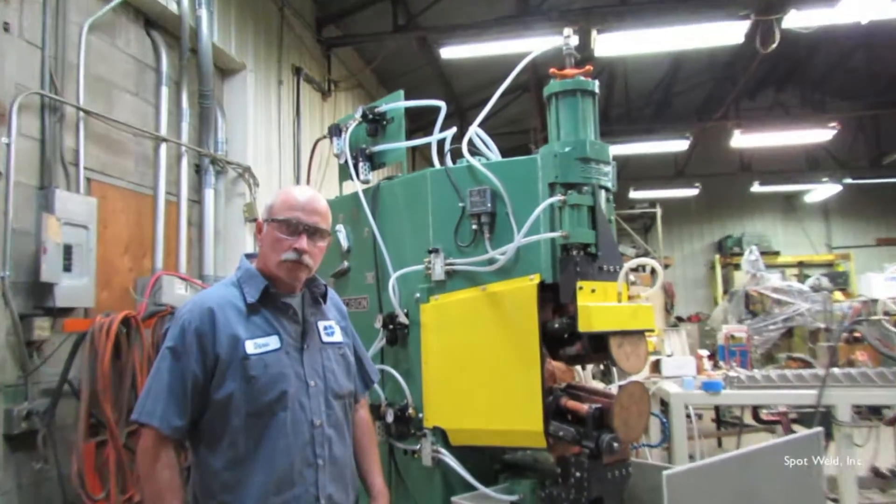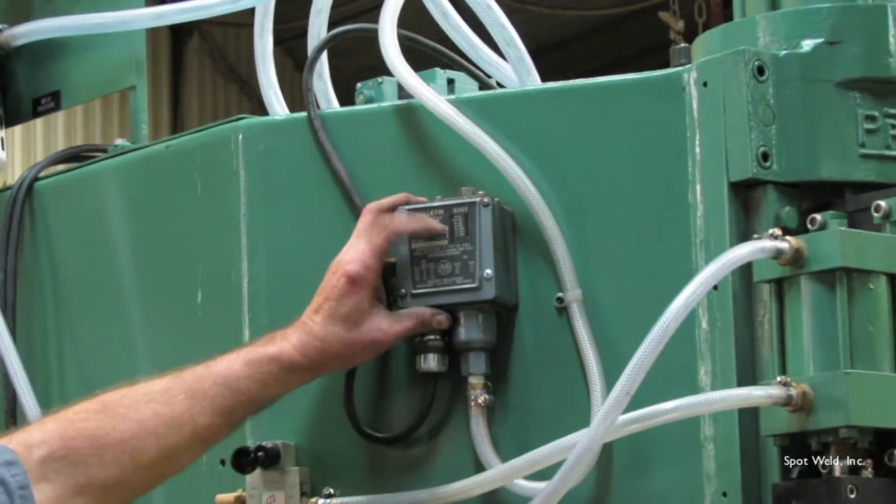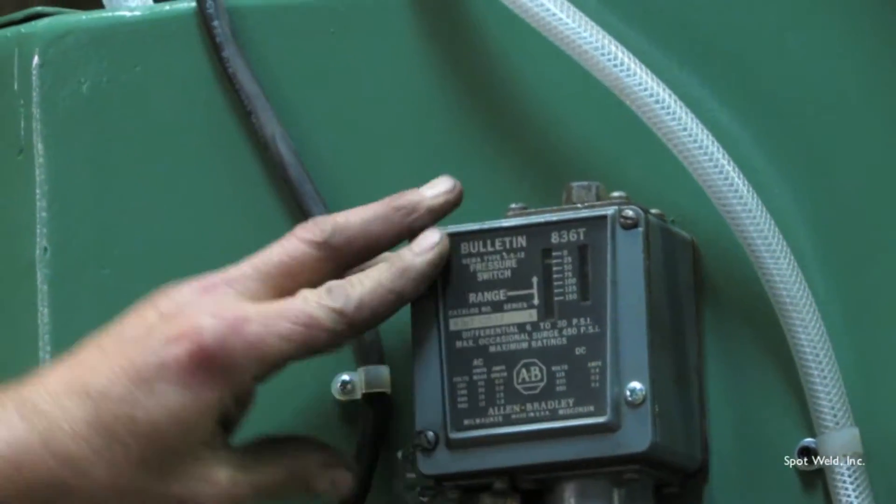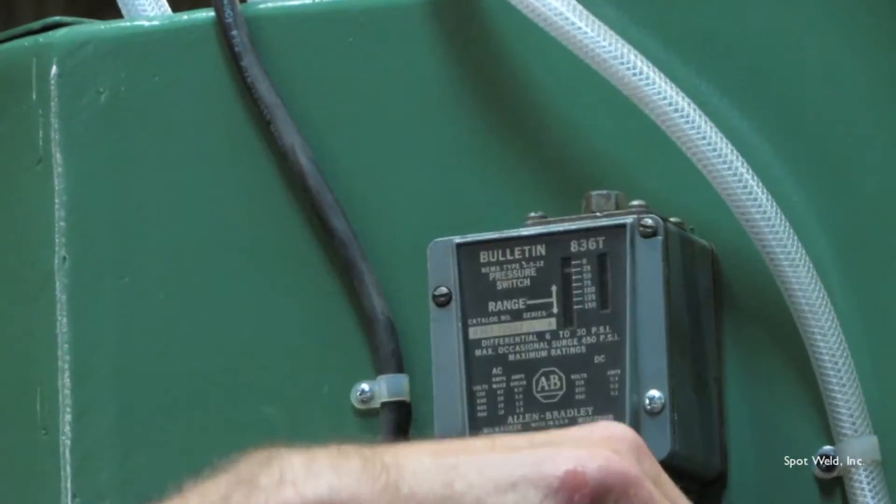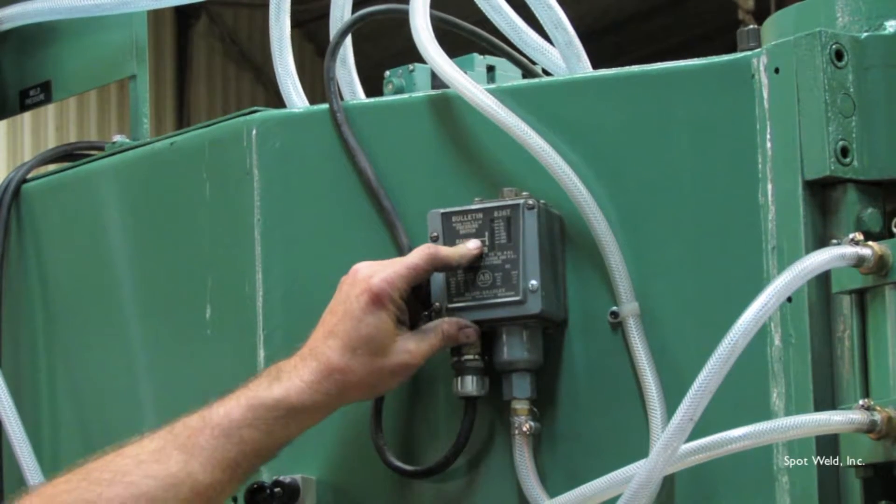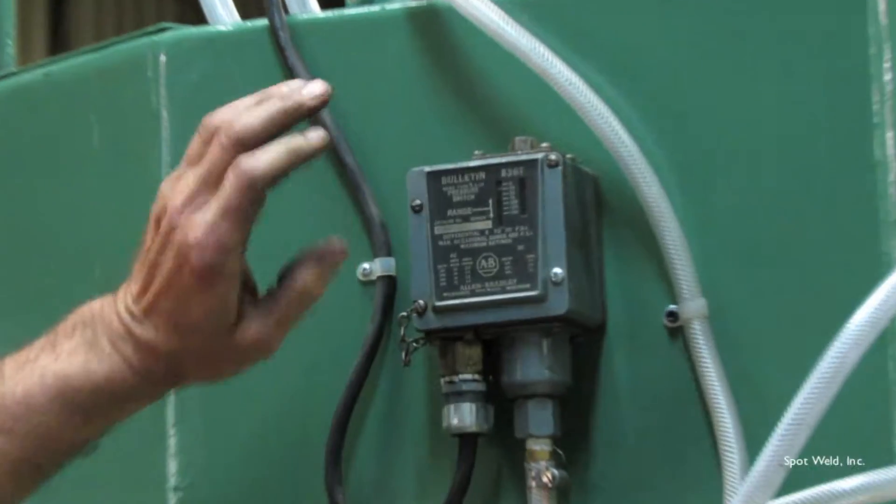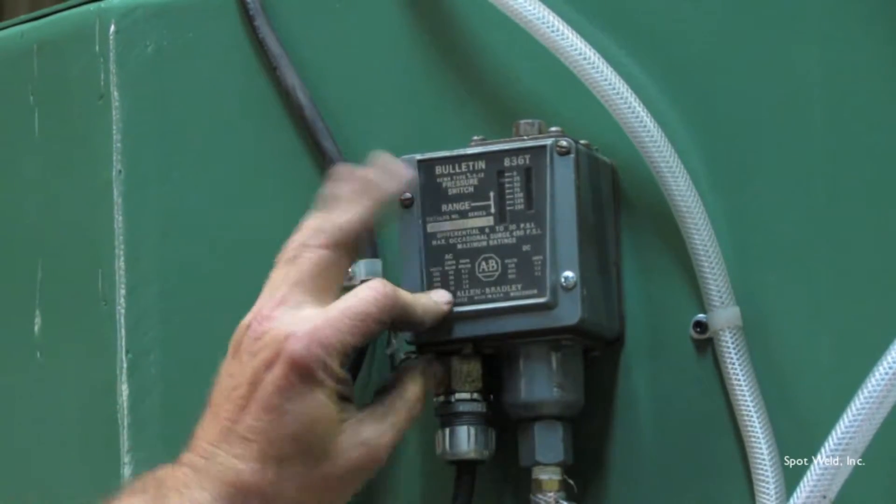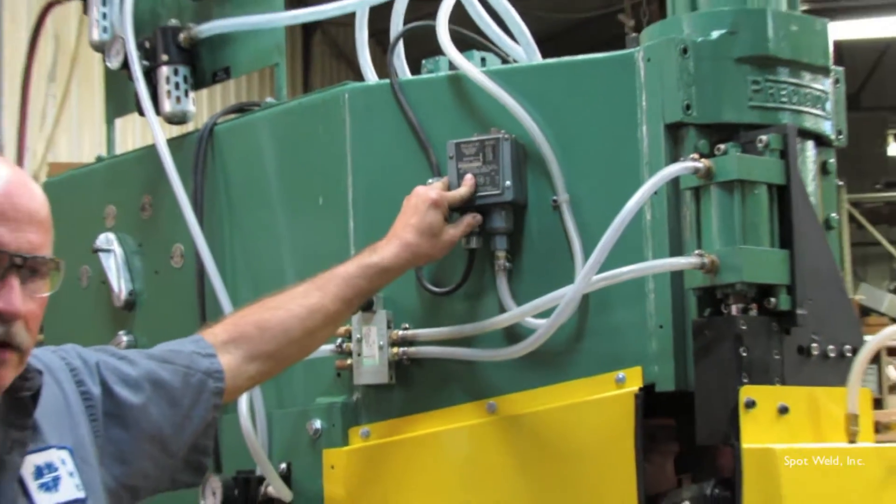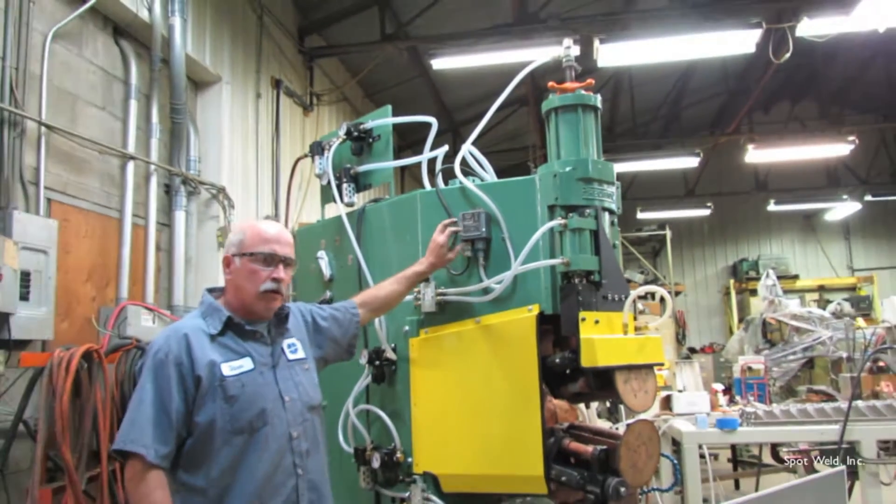You have a pressure switch here which is a must on a seam welder. The heads come together. When this makes pressure, it tells the welder okay, start welding and start the motor. That's your main safety on your wheels right there. If it doesn't have enough pressure, the wheels will sit there and wait. It won't weld until you get the right pressure.